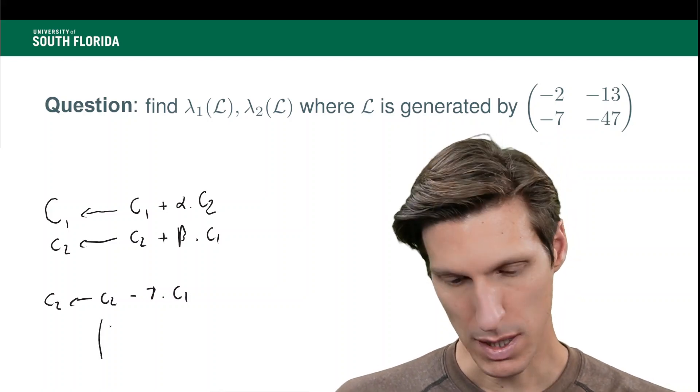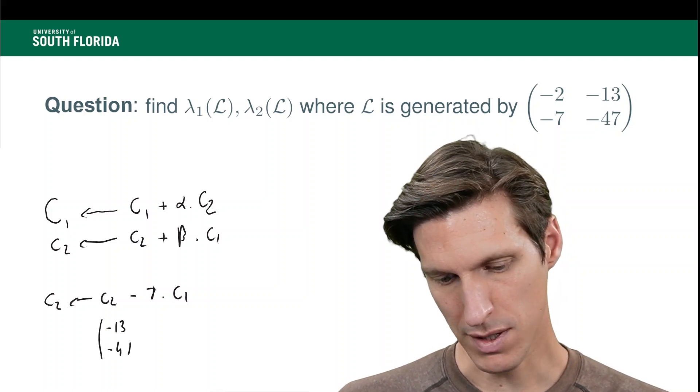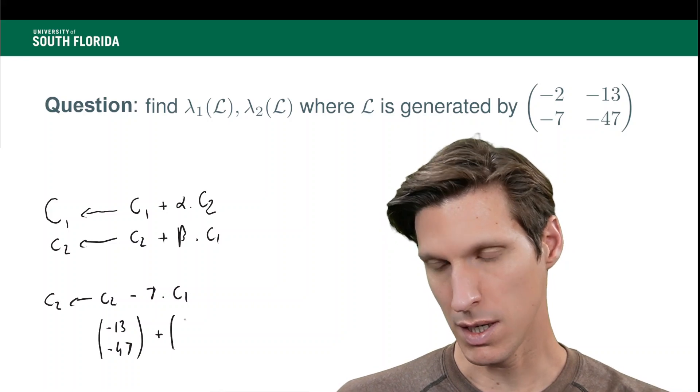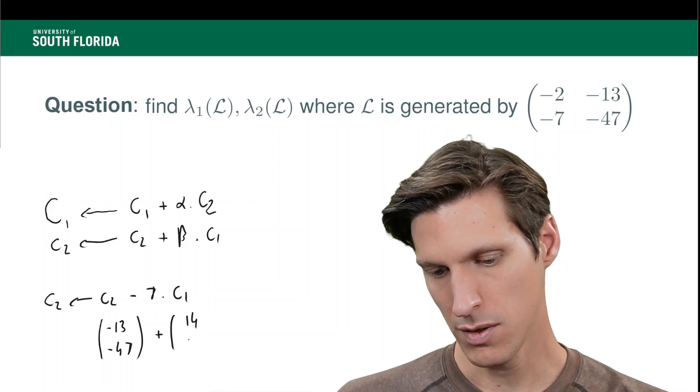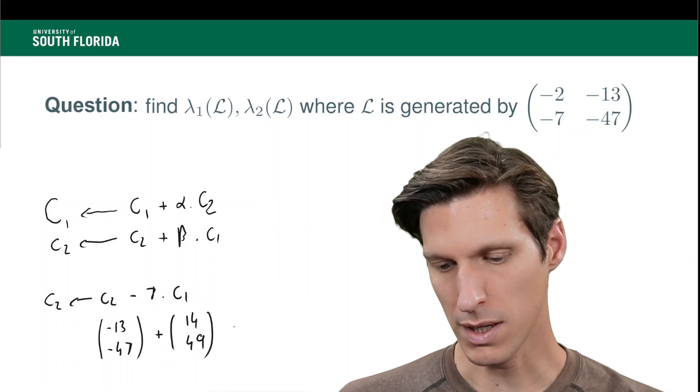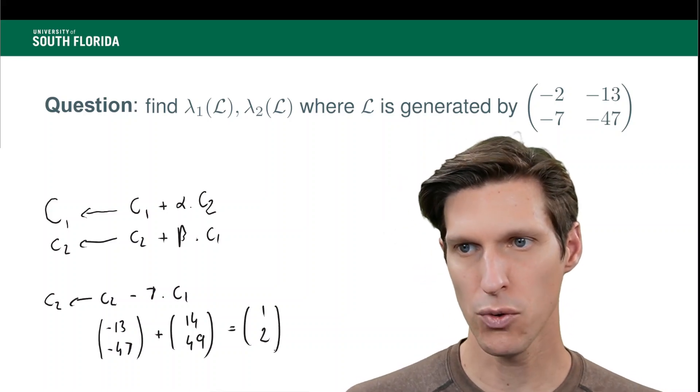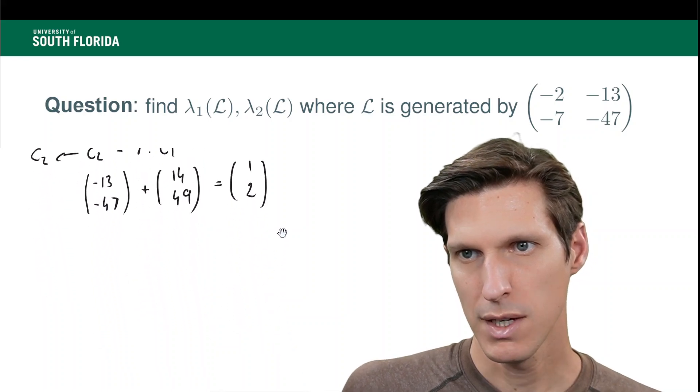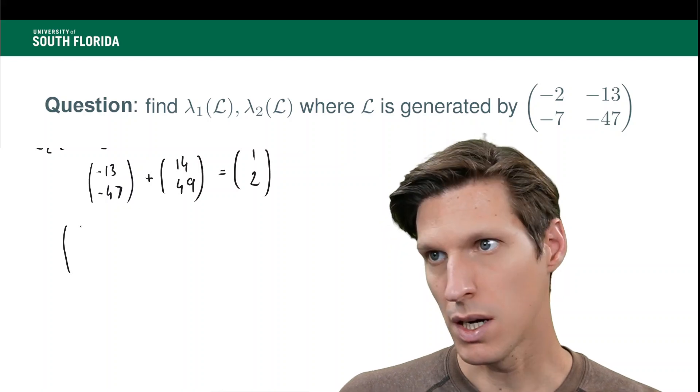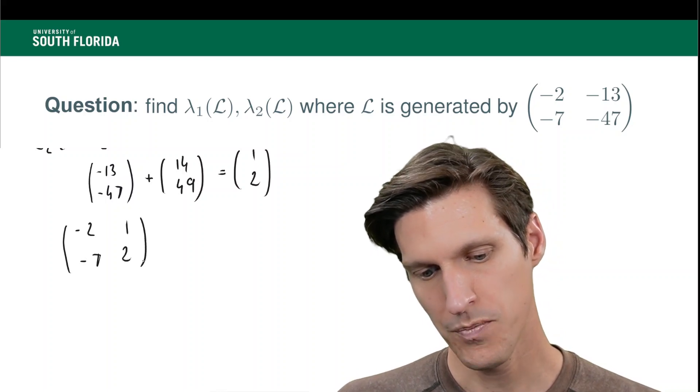I get the vector (-13, -47) plus (14, 49), and that is (1, 2). So this is a much shorter vector. So now, what do I have? If I have a basis that is made of (-2, -7) and then (1, 2).